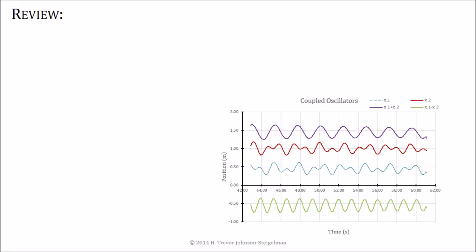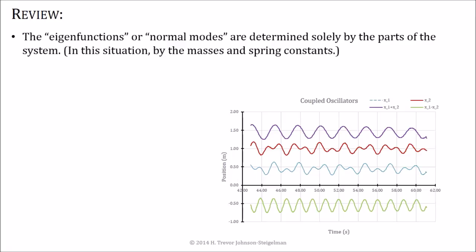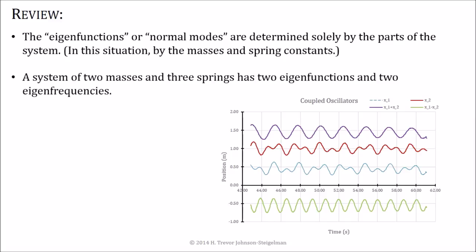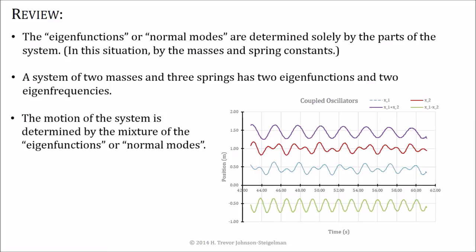So in a quick review of everything we've covered so far, the eigenfunctions or the normal modes are determined solely by the parts of the system. In our situation, it depended on the masses and the spring constants. If we have a system of two masses and three springs, it has two eigenfunctions and two eigenfrequencies. If K1, K2 and K3 are all equal to each other and M1 and M2 are equal to each other, then the frequencies of these eigenfunctions differ by the square root of 3. The motion of the system is determined by the mixture of the eigenfunctions or the normal modes.